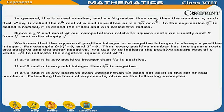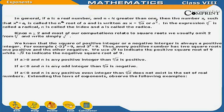In the expression n radical A, the radical sign is called a radical, n is called the index, and A is called the radicand. Since n is greater than or equal to 2, and most computations relate to square roots, we usually omit 2 from 2 radical and simply write under root. We know that the square of a positive or negative integer is always positive — for example, minus 3 whole squared equals 9, and 3 squared equals 9. Thus every positive number has two square roots: one positive and one negative. If A is greater than 0 and n is any positive integer, then n radical A is positive. If A is less than 0 and n is any positive even integer, then n radical A does not exist in the set of real numbers.